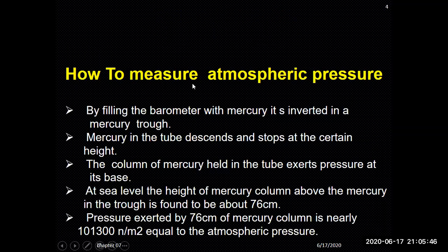To measure atmospheric pressure using a barometer filled with mercury, the tube is inverted into a mercury trough. The mercury in the tube descends and stops at a certain height. The column of mercury held in the tube exerts pressure at the base. At sea level, the height of the mercury column is found to be 76 centimeters, and the pressure exerted is nearly 101,300 newton per meter squared, which equals atmospheric pressure.